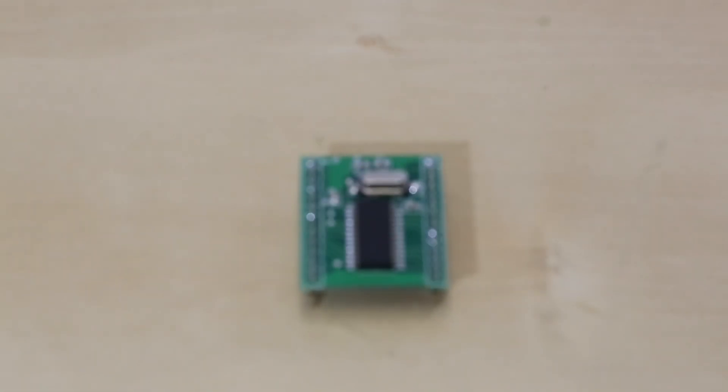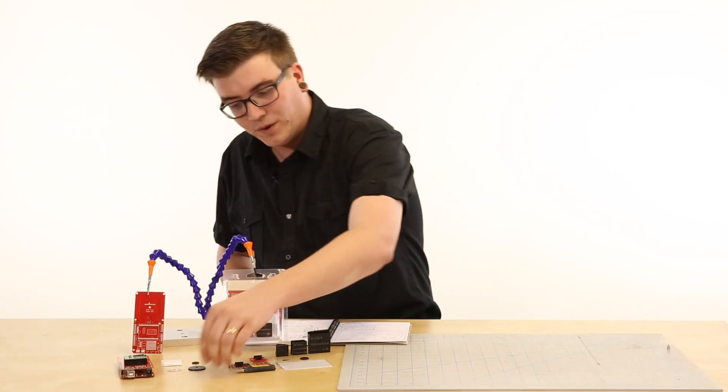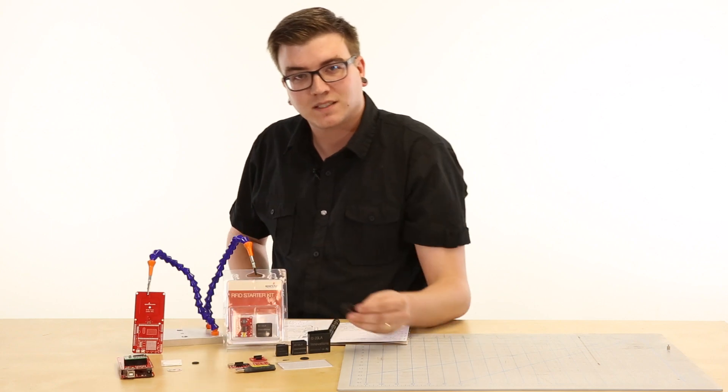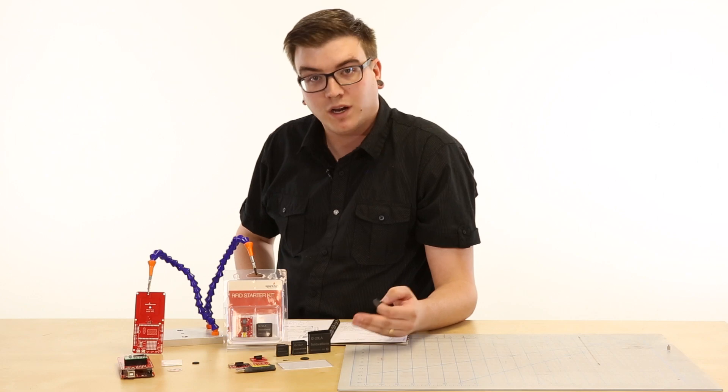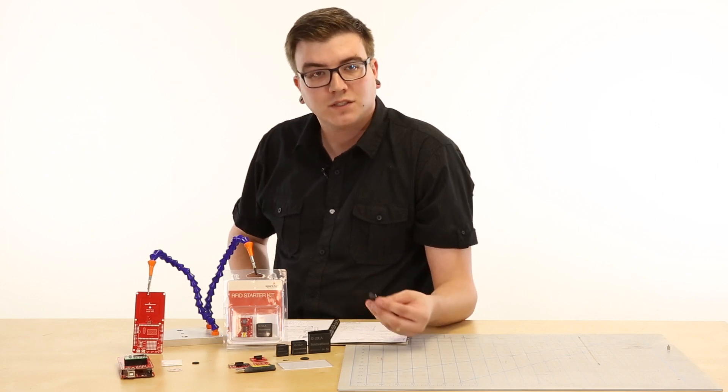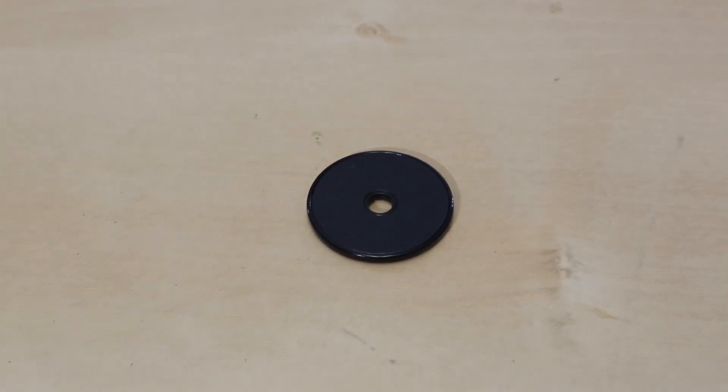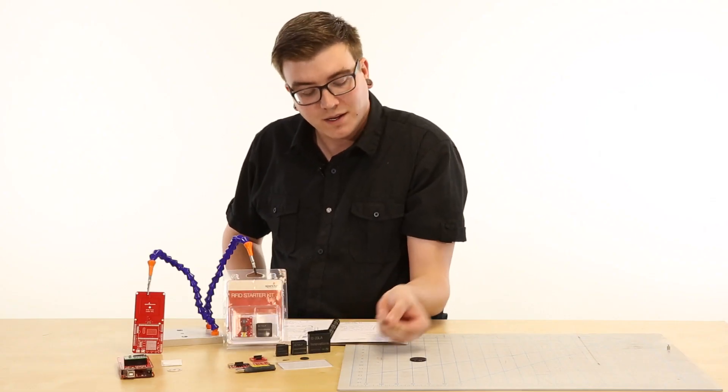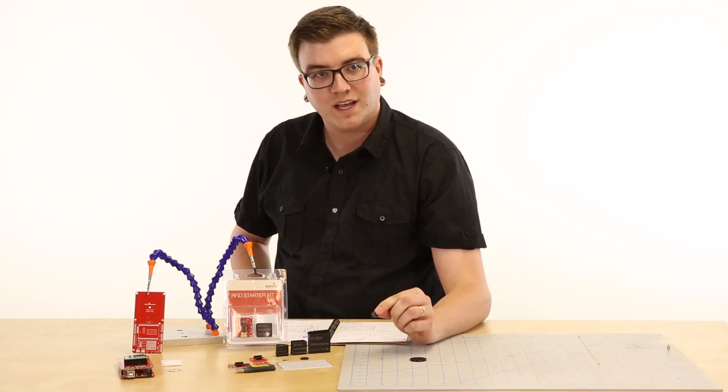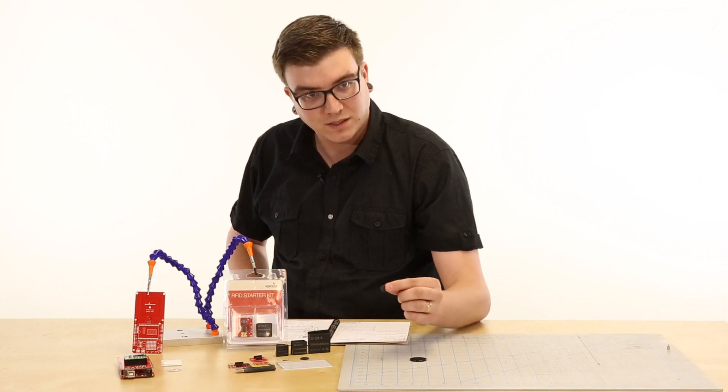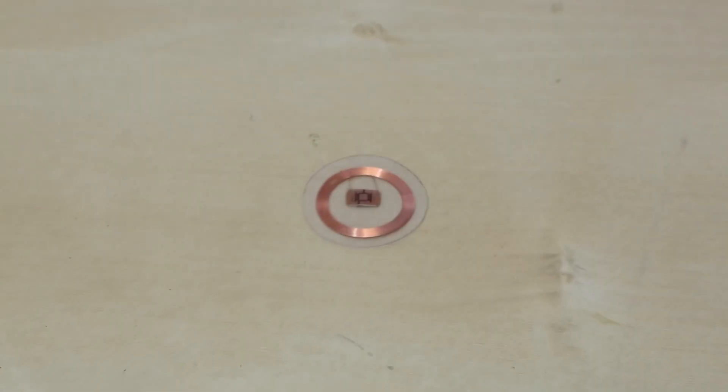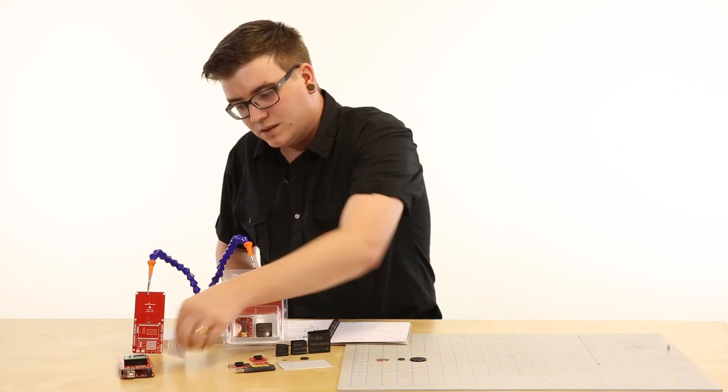For the SM130, we have a number of options for tags. Be aware these are 13.56 MHz tags, so they won't work with your other tags that are generally like 125 kHz. For the 13.56, we carry the token tag, a waterproof laundry tag that can be sewn into a garment, a transparent tag, and an adhesive tag so you can stick this to something.